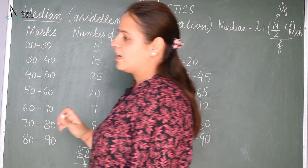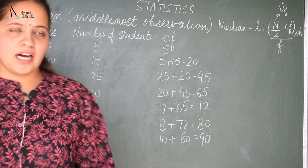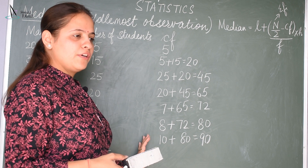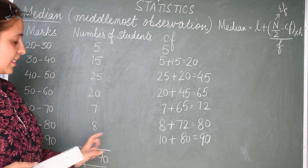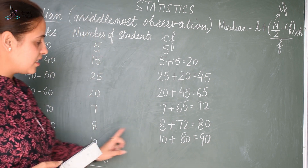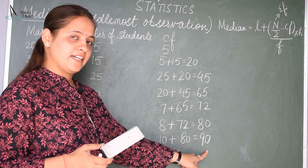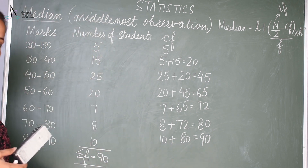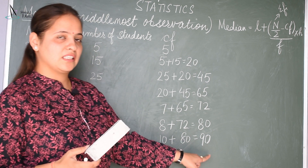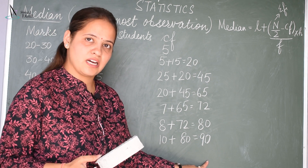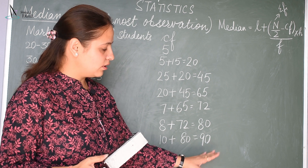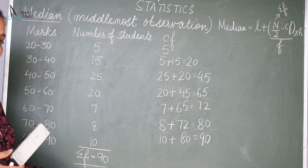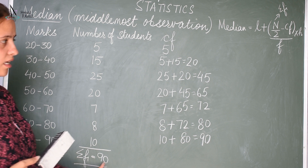Now you have to check whether you have found the cumulative frequency correctly or not. The last cumulative frequency you are getting is 90, and the sum of frequencies is also 90. That means you have done the calculation correctly — the last cumulative frequency is the same as the sum of all the frequencies.